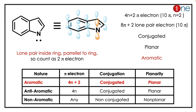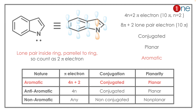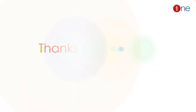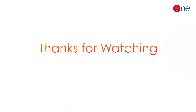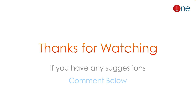Where n equals 2, the system is conjugated and definitely planar. So 4n+2, conjugated, and planar means it's an aromatic system. So indole is aromatic. That's all from this video — thanks for watching.